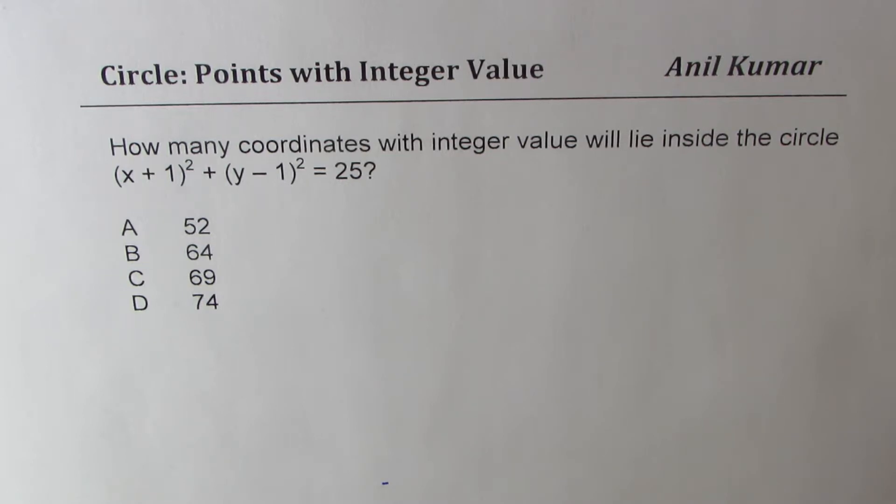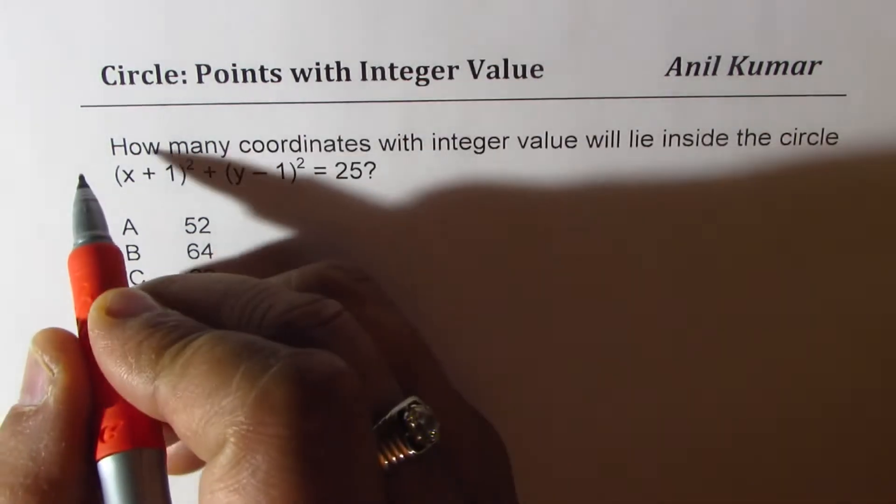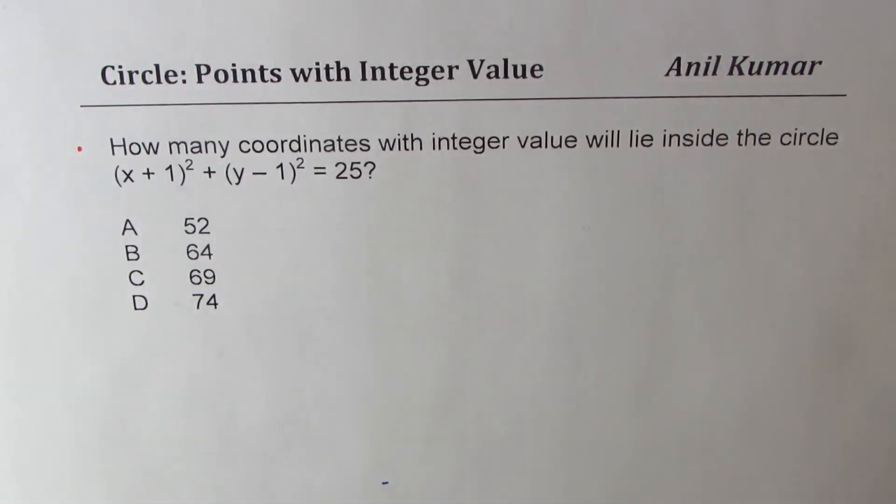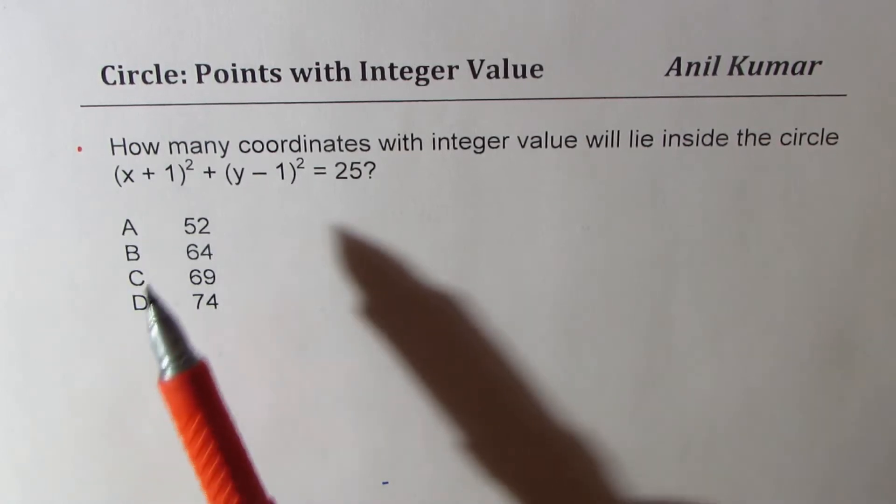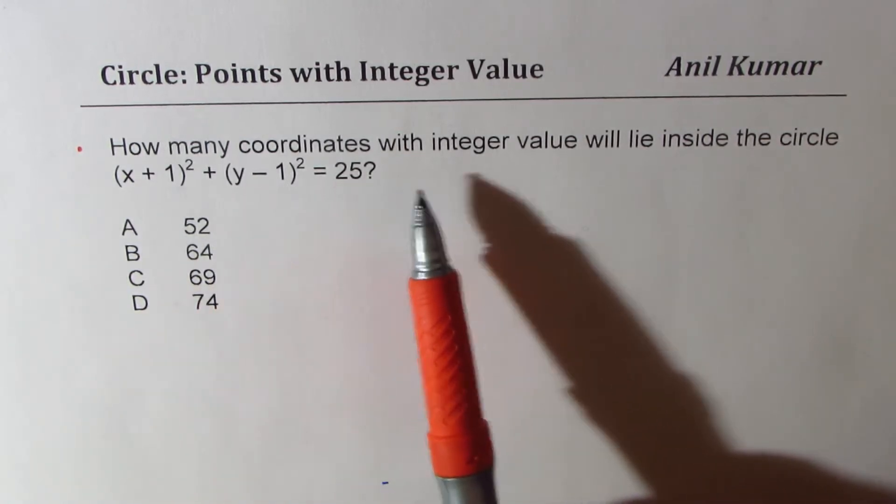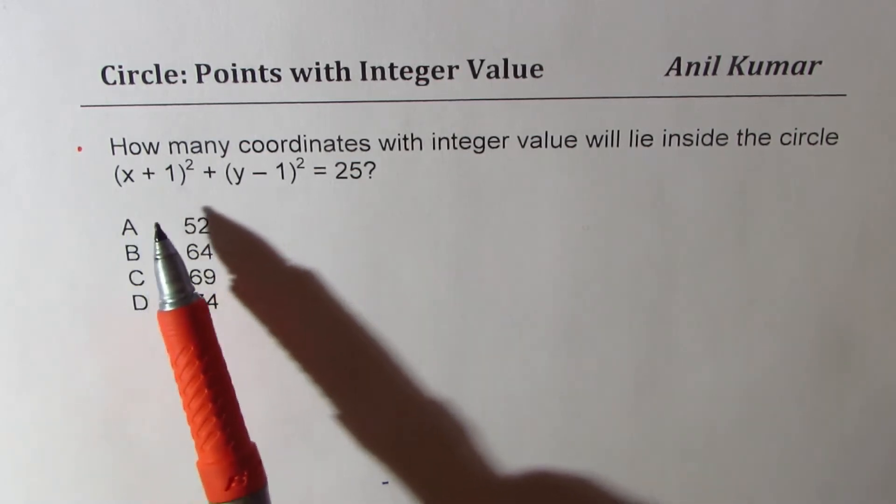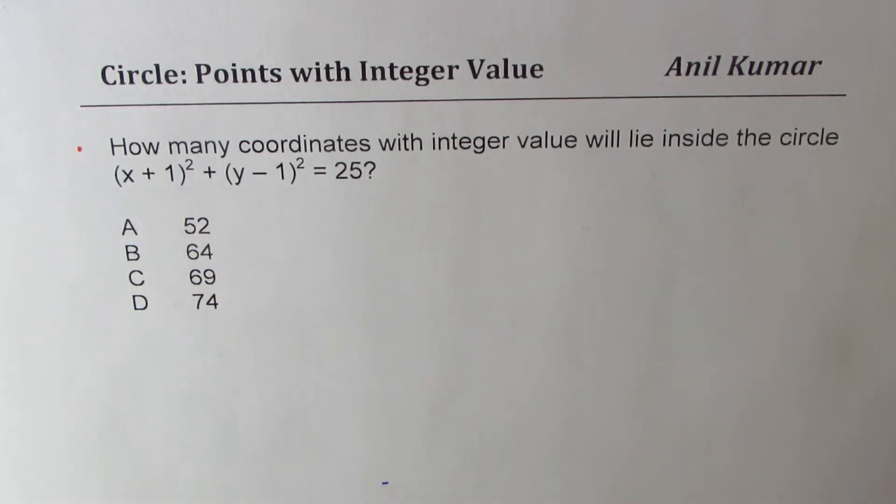the question was, if the center of the circle is changed from origin to some other point, then what happens? Now we are answering this question. Let's look into the modified form. How many coordinates with integer value will lie inside the circle (x + 1)² + (y - 1)² = 25?